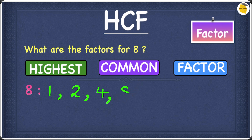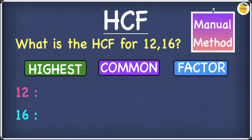So the factors of 8 are 1, 2, 4, and 8. Now that you know what HCF is and what factors are, let's move on to the questions. Let's have a look at this example: what is the HCF for 12 and 16?